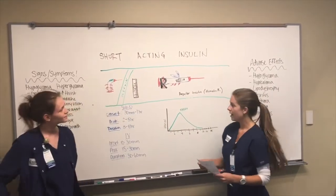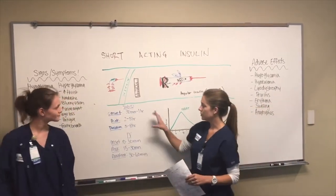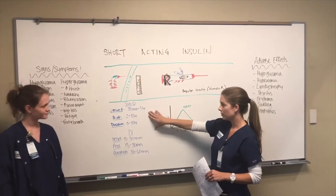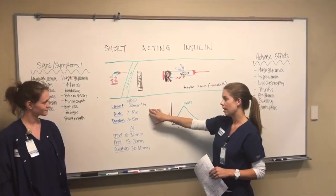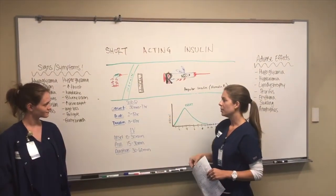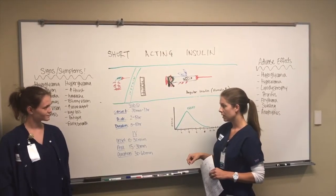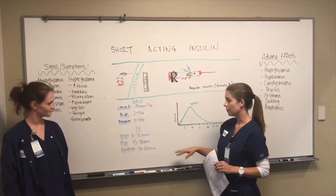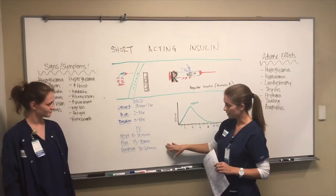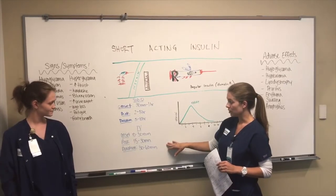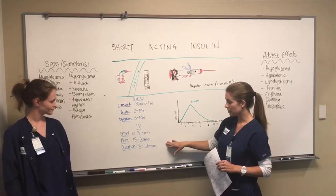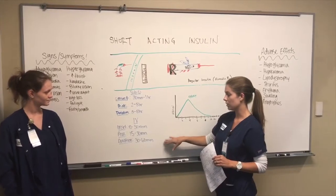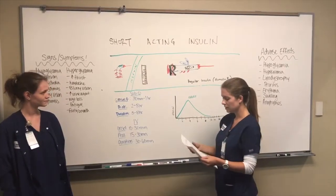We have two different sections for the onset. For sub-Q, the onset is 30 minutes to an hour, the peak is 2 to 5 hours, and the duration is 5 to 8 hours. For IV, the onset is 10 to 30 minutes, the peak is 15 to 30 minutes, and the duration is 30 to 60 minutes.